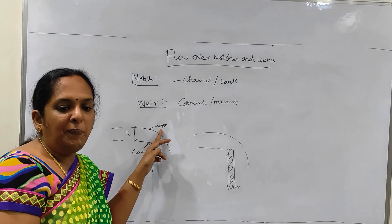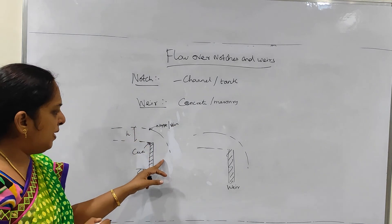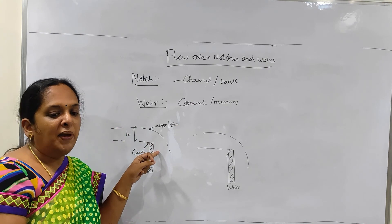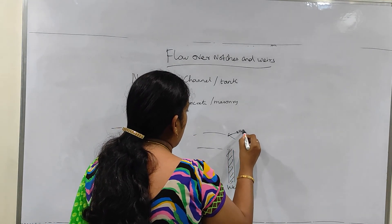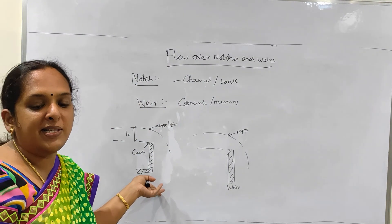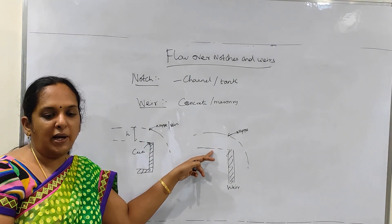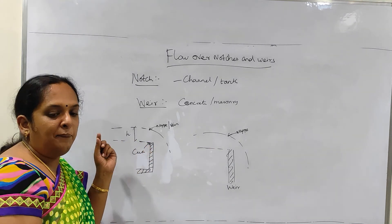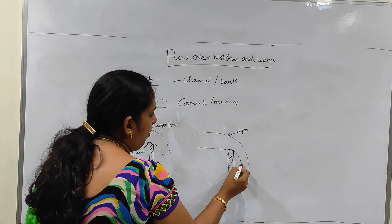What is nappe? The weir sheet of water is otherwise said to be nappe or vein. From the figure you can understand — the water or the sheet of water flowing through the notch or over the weir is said to be the nappe or vein. What is the crest? The bottom edge of the notch, or we can say the top of the weir, over which the water flows, is known as the sill or crest.